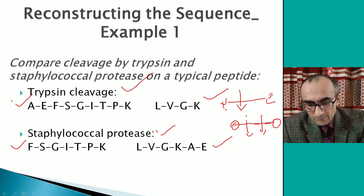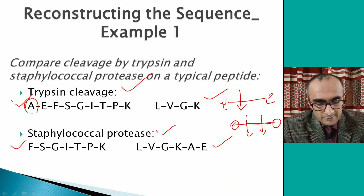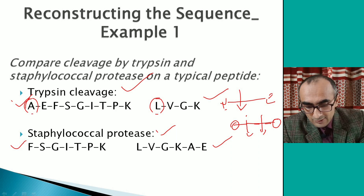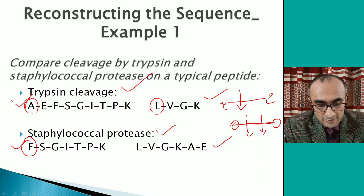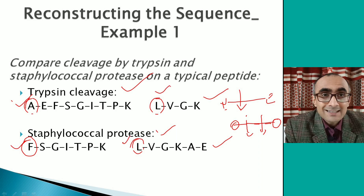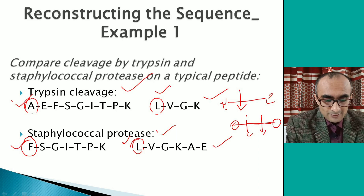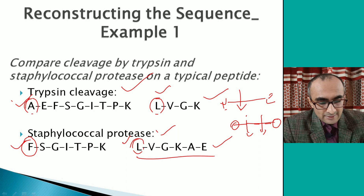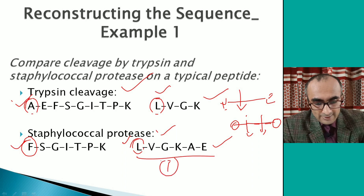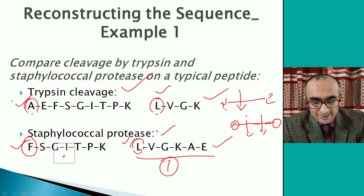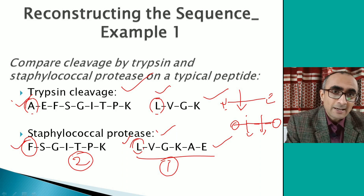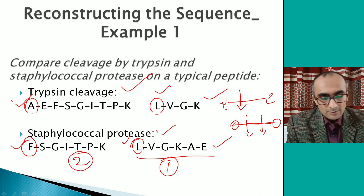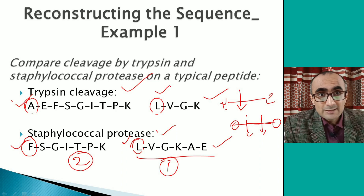In the trypsin digest, the N-terminal is alanine in one peptide and leucine in the other. In the staphylococcal protease digest, the N-terminal of one peptide is phenylalanine and the other is leucine. Leucine is common in both cases, meaning the leucine-containing peptide is on the N-terminal side. So LVGK is the first peptide and FSGITKP is the second — giving the reconstructed sequence of this peptide.